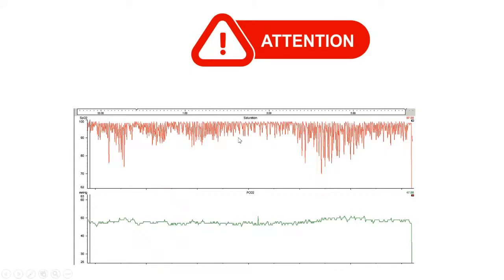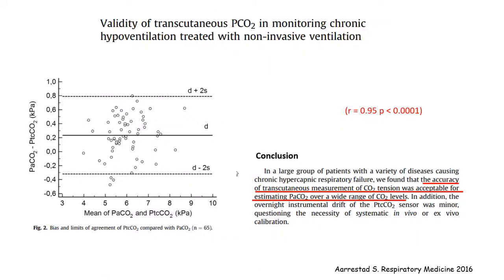Another limit is that transcutaneous pCO2 is not sensitive in detecting periodic rapid changes in pCO2 — either hypocapnia or hypercapnia — if they are very short, they are not detected. As for accuracy, many studies published in recent years conclude that the accuracy of transcutaneous pCO2 measurements is acceptable for estimating pCO2 over a wide range of CO2 levels.